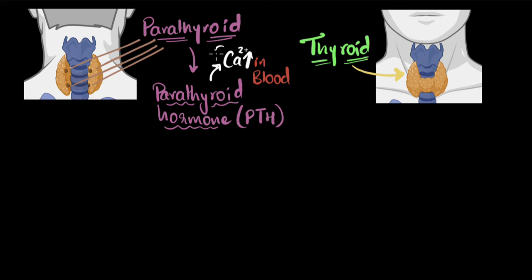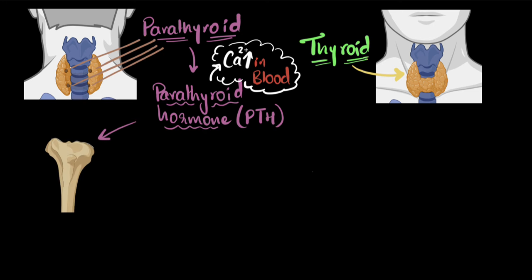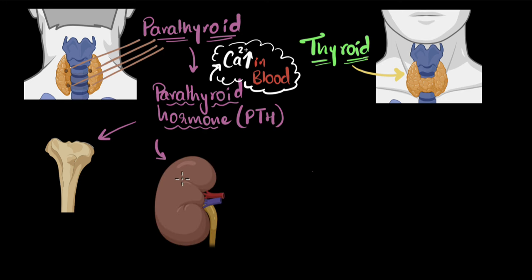How does it do that? Well, it turns out that the PTH receptors are specifically found in some of the cells of your bones and your cells in the kidneys — so this is where they have the most effect. So what happens in your bones? Well, when some specialized cells of the bones bind to PTH, what it does is that it basically takes the calcium from the bones and puts it back into the blood. That increases the calcium levels in the blood.